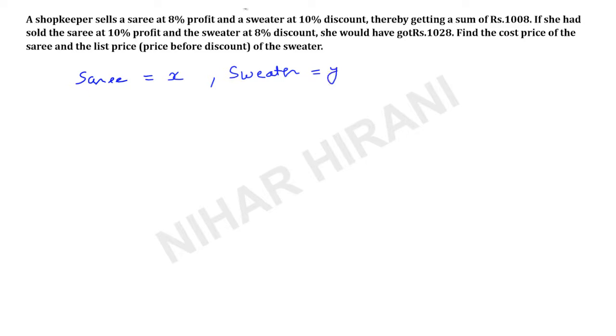Now here in the first statement it says 8% profit on saree, 10% discount on sweater, and he will collect total Rs. 1008. So here first of all I will write Rs. 1008, and here I will write addition because he collects total Rs. 1008. It is not profit; he collects Rs. 1008 by selling two products.